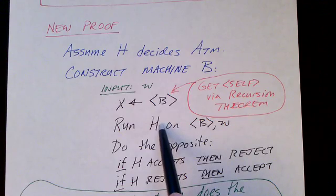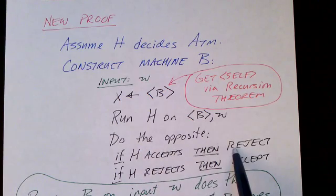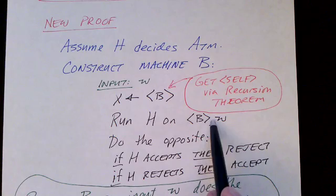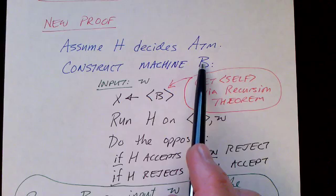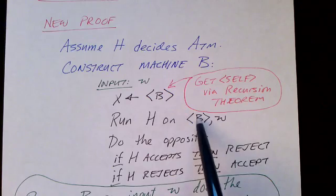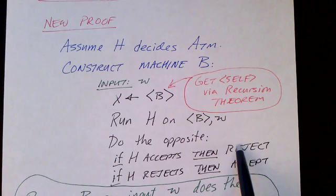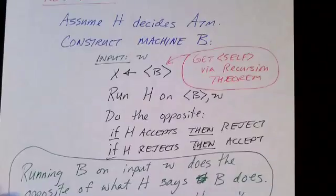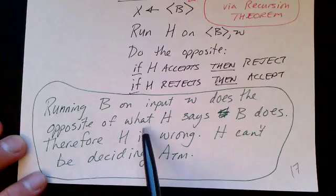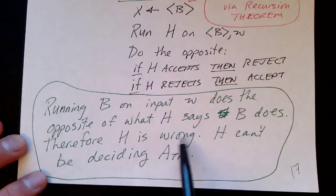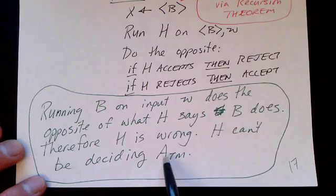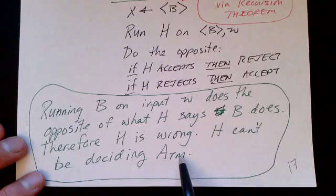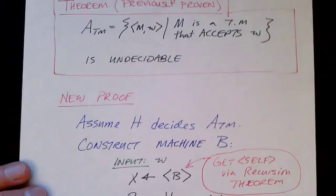H is a decider. If H accepts — meaning B would accept W — then machine B rejects. If H rejects — meaning B does not accept W — then B accepts. So here we have machine B with input W: if H says B should accept W, then B rejects; if H says B should reject W, then B accepts. Running B on input W does exactly the opposite of what H says B does. Therefore H is wrong, and H cannot be deciding the acceptance problem for Turing machines. That's a short, simple, and sweet proof that the acceptance problem for Turing machines is undecidable.